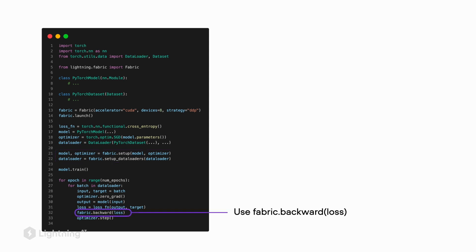As the last step, instead of calling loss.backward, we use fabric.backward(loss) to compute the backward pass. And in a nutshell, that's all you have to do to change your PyTorch code to Fabric. It will then allow you to use multiple GPUs, mixed precision training, and many other features of the Trainer. We will have a hands-on example in the next video, where I'll show you how to train a large language model using Fabric.